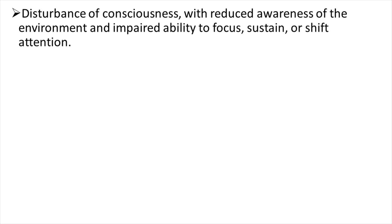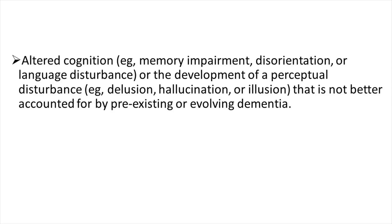First, disturbance of consciousness with reduced awareness of the environment and impaired ability to focus, sustain, or shift attention. Second, altered cognition — for example memory impairment, disorientation, or language disturbance — or the development of a perceptual disturbance such as delusion, hallucination, or illusion that is not better accounted for by pre-existing or evolving dementia.